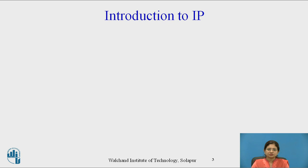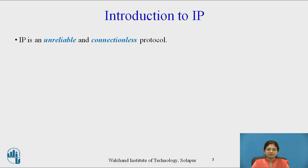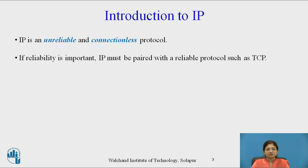Let's start with the introduction to IP. IP is an unreliable and connectionless protocol. Unreliable means that when an IP packet is sent, packet delivery is not guaranteed — there is no quality of service. If reliability is important, IP must be paired with a reliable protocol such as TCP. IP is also known as the best effort delivery service.